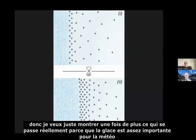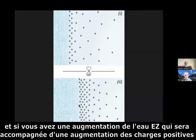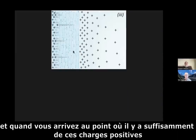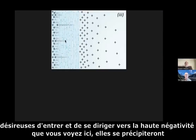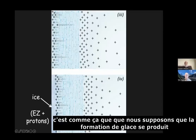Ice is pretty important for weather, so let me show what actually happens. We start with EZ sitting here and positive charges. If you have an increase in EZ, which will be accompanied by an increase of positive charges — because you get more negative here, you get more positive here — the two simply separate. When you get to the point where there are enough positive charges eager to press toward the high negativity, they'll rush in to neutralize it. As they do, that constitutes the formation of ice, which is EZ plus protons. That's the way we surmise ice formation occurs.